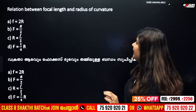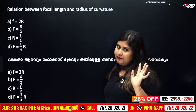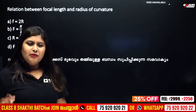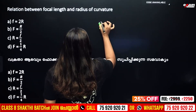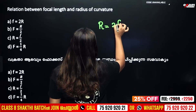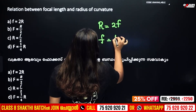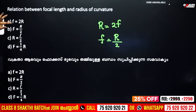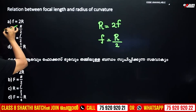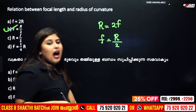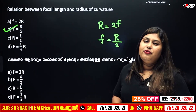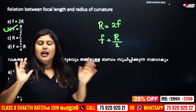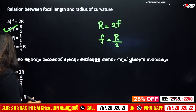Relations between focal length and radius of curvature — radius of curvature and focal length. Radius of curvature is two times the focal length. So F is equal to R by 2. This is the relation between focal length and radius of curvature.